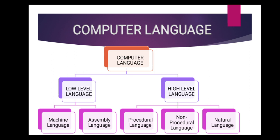Computer language is classified into two types: low level language and high level language. Low level language is again classified into two types: machine language and assembly language. Machine language is 0 and 1, which our computer understands — it is the only language understood by the computer. Now second is assembly language. Assembly language is the language which uses symbols — symbolic codes.